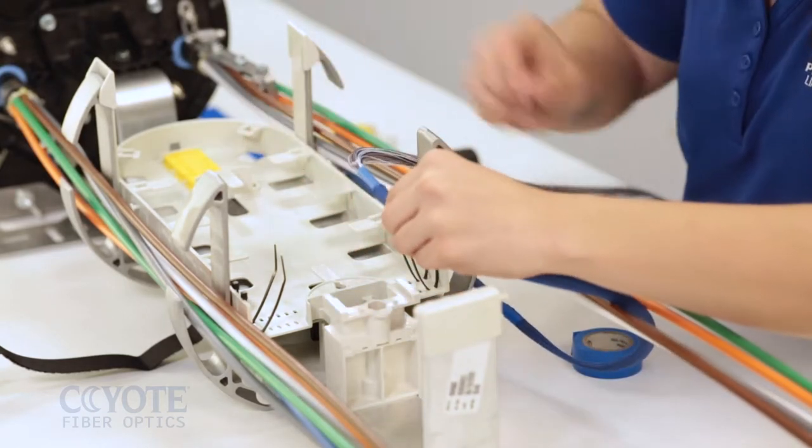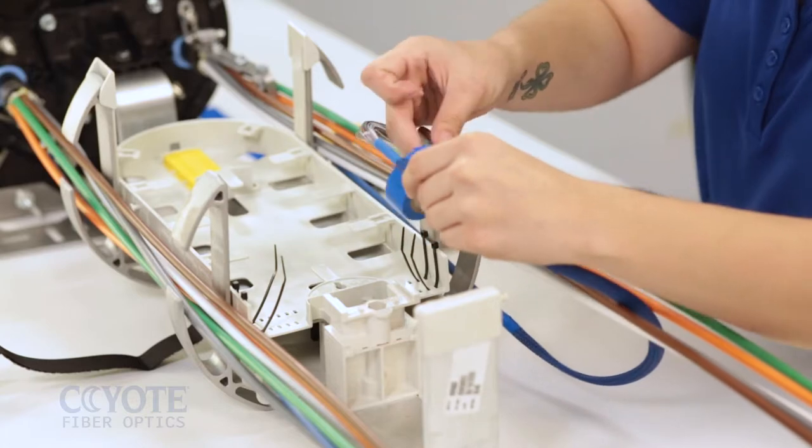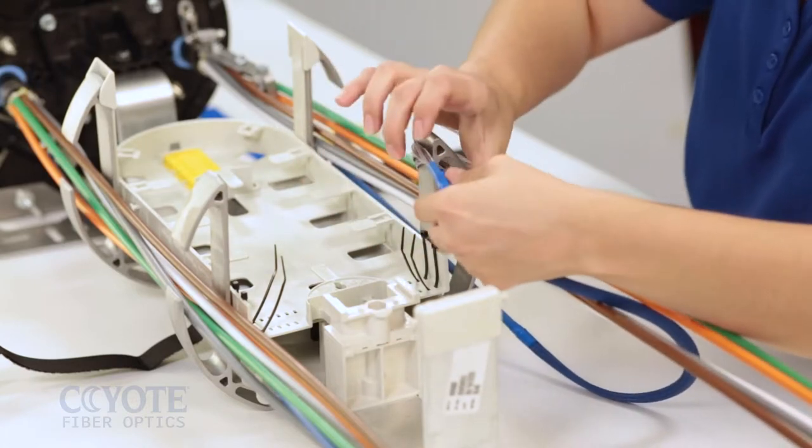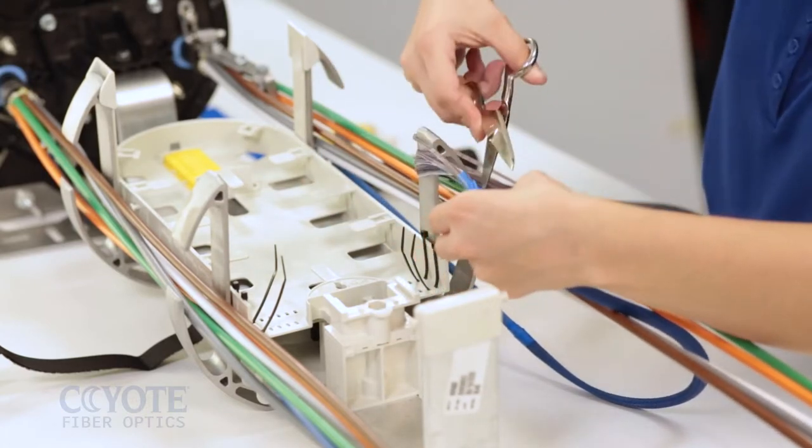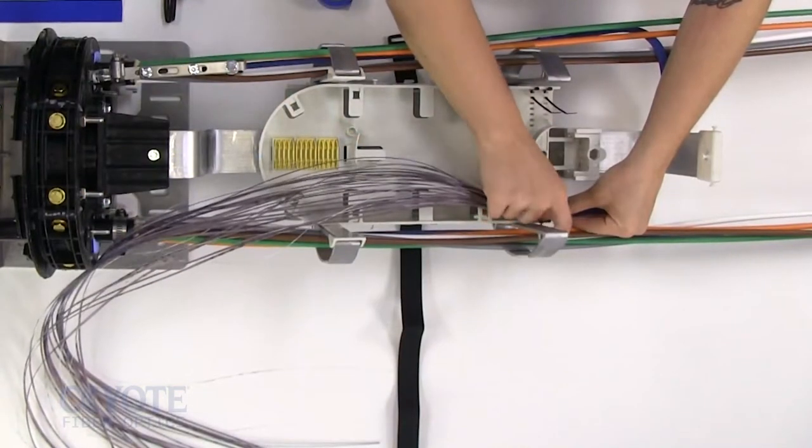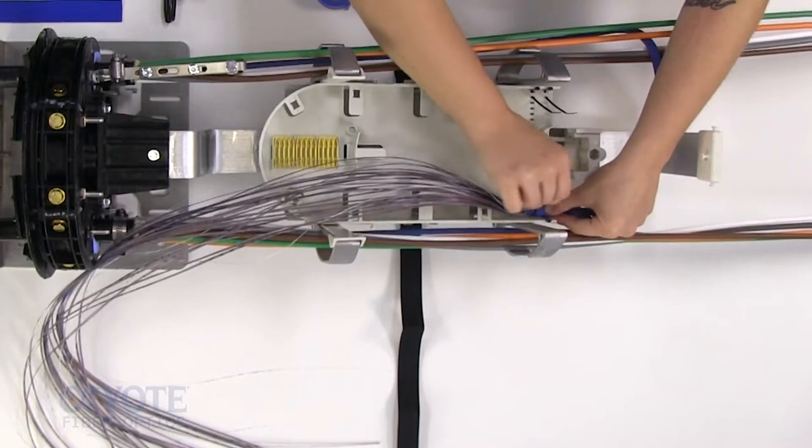Repeat this process for the other end of the subunit. Secure the subunit to the splice tray using tie wraps.